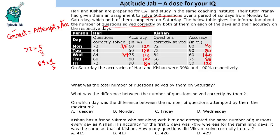They are completing on Saturday, so we need to find how many questions they attempted on Saturday. There is also a question about questions solved on Saturday. Adding Hurry's attempts gives 240 and 300, totaling 540. So 60 questions remain for Saturday. Hurry's accuracy on Saturday was 90%, so he will get 54 correct questions.